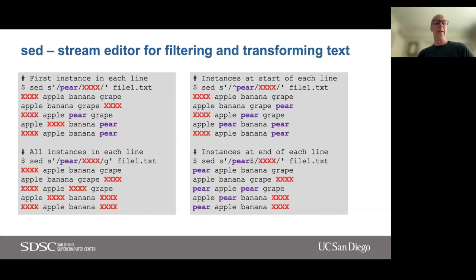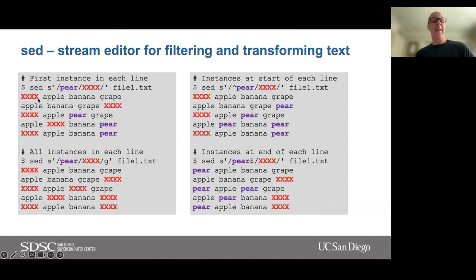In the first case, the first instance in each line is substituted: `sed 's/pear/xxxx/'` — the first occurrence of 'pear' in each line is replaced with 'xxxx'. In lines with multiple occurrences of pear, only the first one was substituted. If I use the global replace option `sed 's/pear/xxxx/g'`, every occurrence of pear is replaced by the four x's. I can also use the caret anchor: `sed 's/^pear/xxxx/'` to only make the substitution if 'pear' appears at the start of the line. And I can use the dollar to only substitute instances at the end of each line.